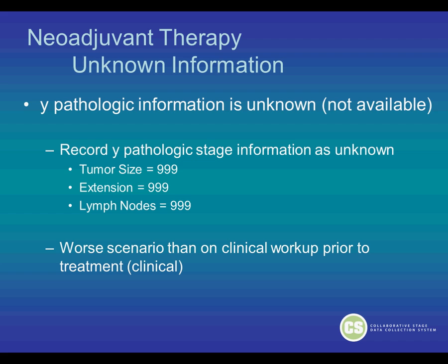Now if you have unknown staging information — if the Y-pathologic information is unknown or not available in your medical record — you should record the Y-pathologic stage information as unknown: tumor size 999, extension 999, and lymph nodes 999. You should not code something that you know does not fit this criteria. The proper information to collect is that this information is unknown, because this is the worst scenario — worse than the clinical workup prior to the treatment, the clinical stage.